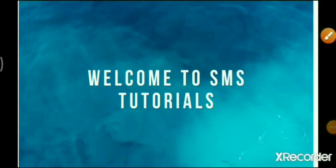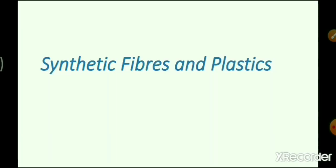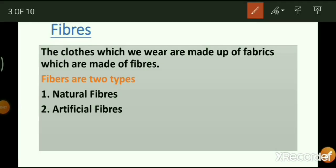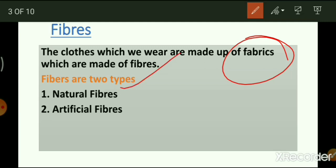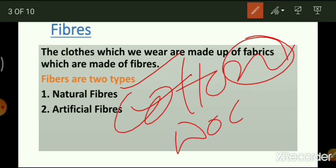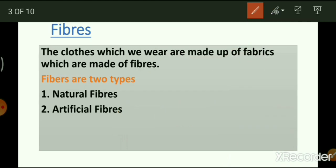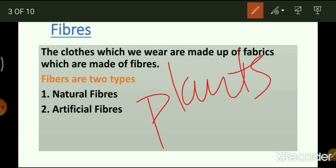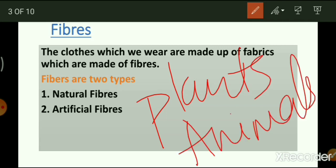Hello friends, welcome to SMS Tutorials. In this video we shall talk about the third chapter: Synthetic Fibers and Plastics. Before discussing synthetic fibers, we shall discuss what fibers are and what the types of fibers are. Fibers are obtained from fabrics made from natural or artificial sources. Natural fibers like cotton, wool, and silk are obtained from plants and animals, and are known as natural fibers.